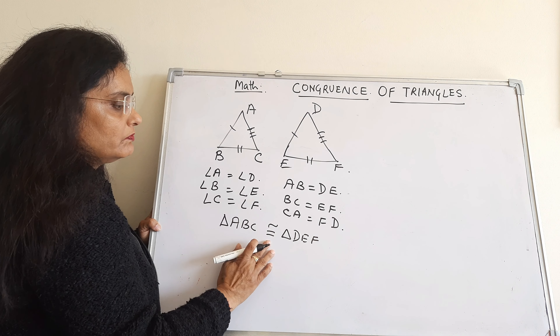This is the symbol for congruent triangles. Now here there are six equalities — three angles and three sides. So two triangles are congruent if the angles and the sides of one triangle are equal to the angles and the sides of another triangle, then we call them congruent.